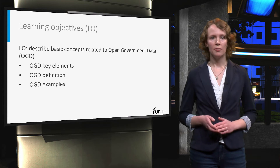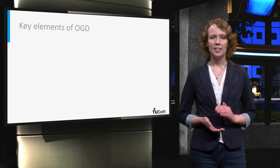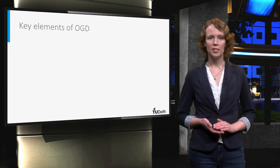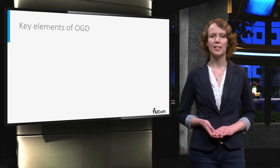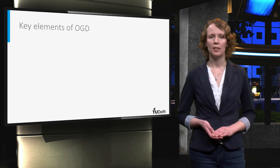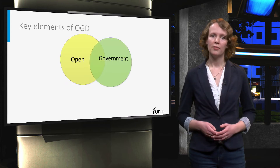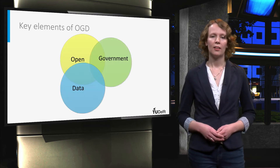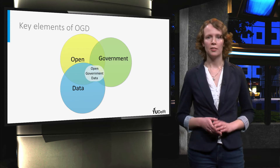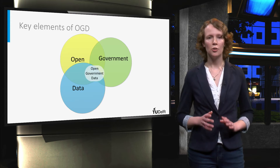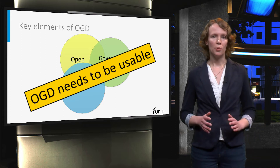So let's start with the key elements. As the name suggests, it is often stated that open government data consists of three key elements, namely openness, government, and data. A fourth element that is often forgotten is the use of the data. Open government data needs to be usable.